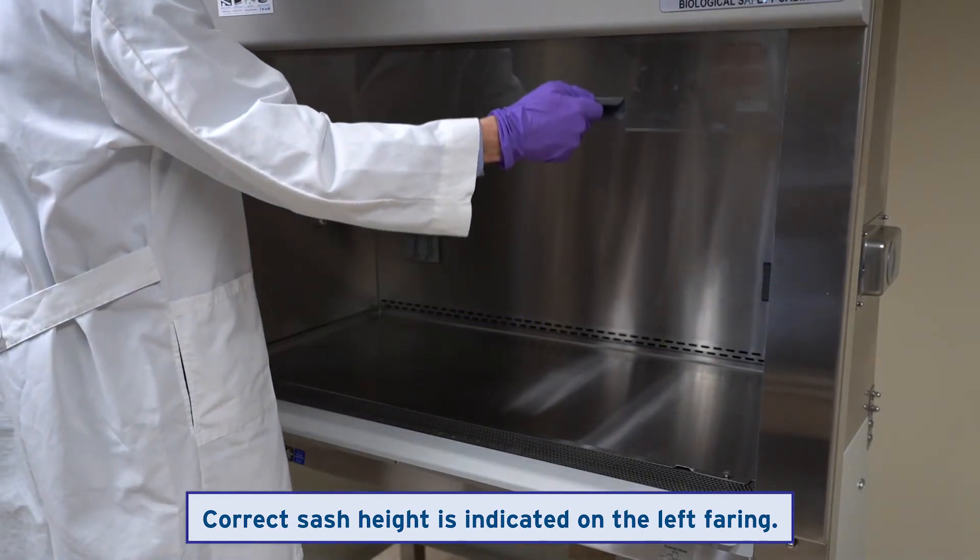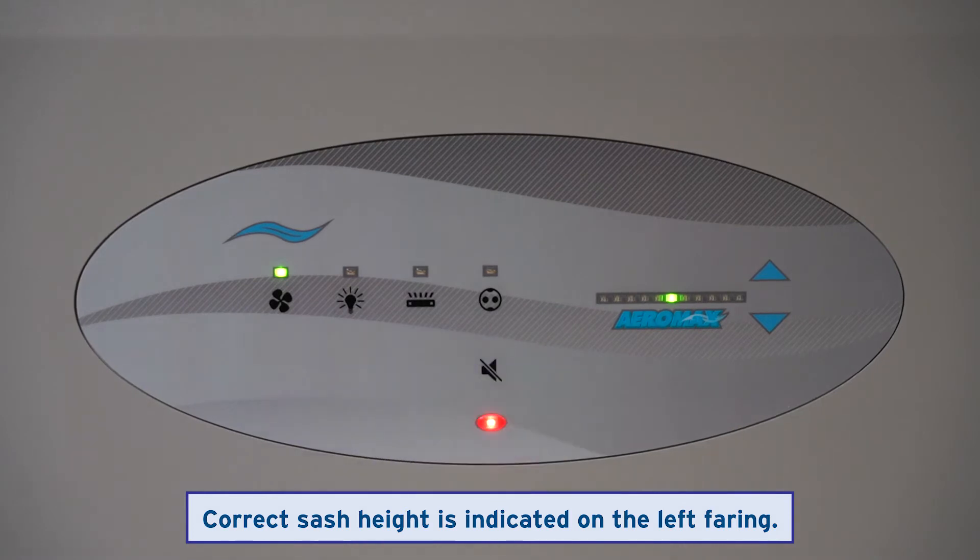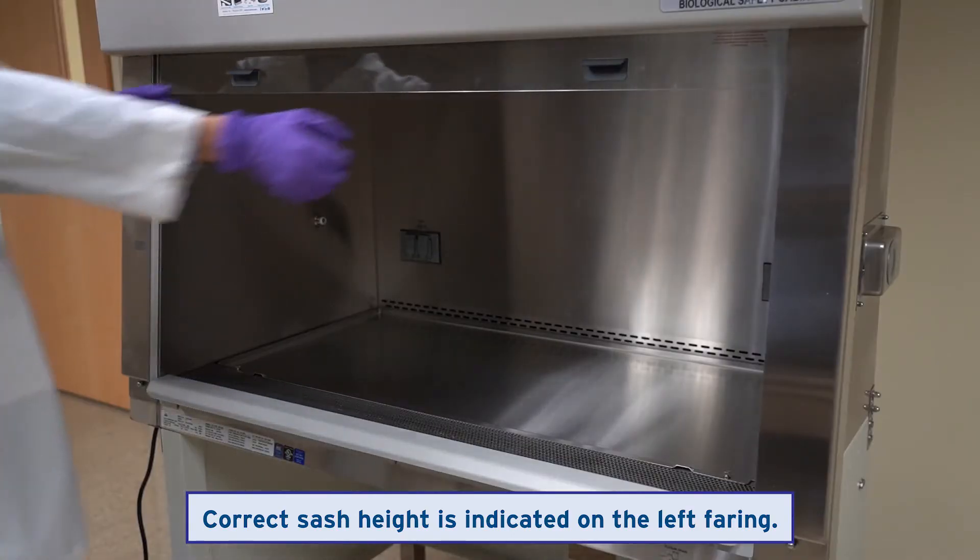An alarm will sound if the sash is raised above the working height. Silence the alarm if cleaning, but return the sash to the correct height before working inside it.